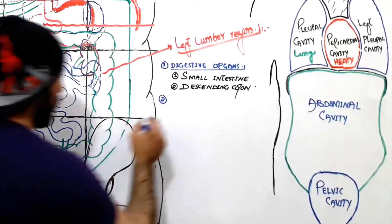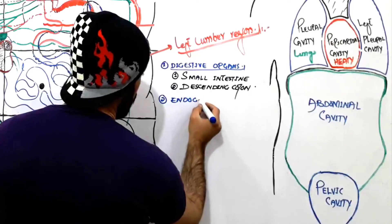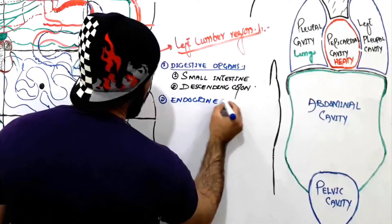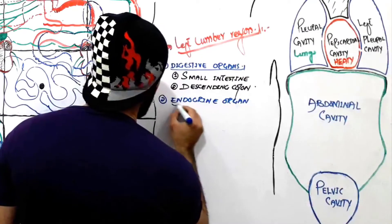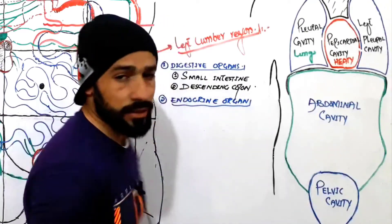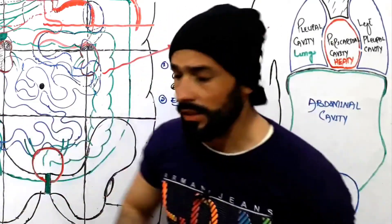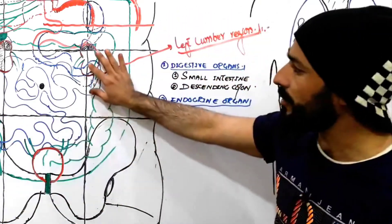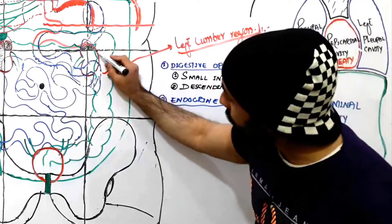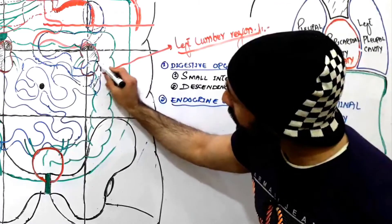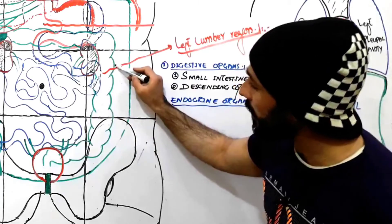The second group of organs found here are the endocrine organs. When we discussed the right lumbar region, the endocrine organs present there were the liver and kidney. But here on the left side, we don't have the liver — only the kidney is found. You can see that some parts of the kidney are found in the left lumbar region.